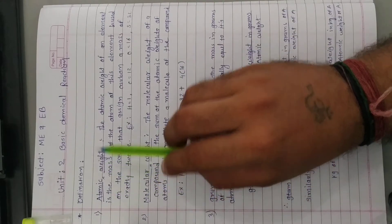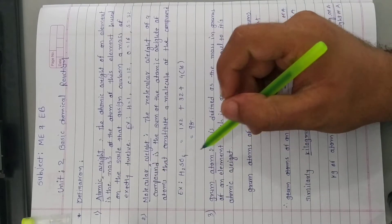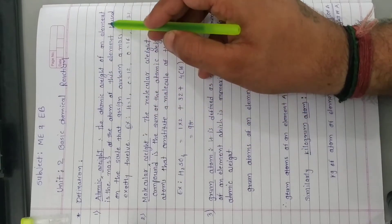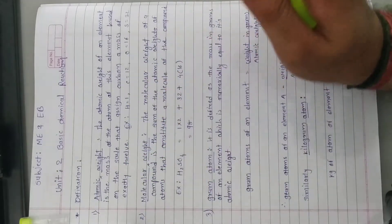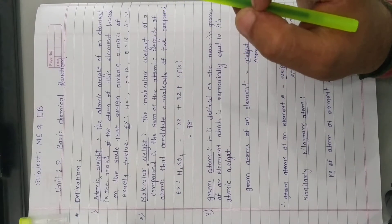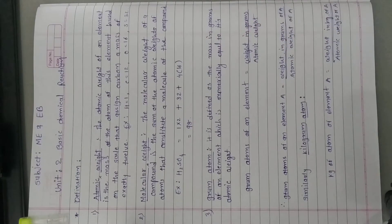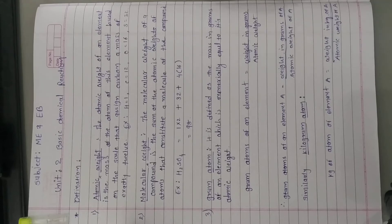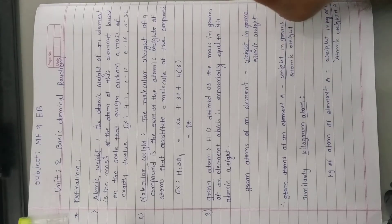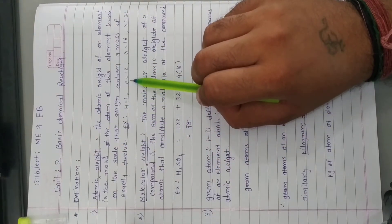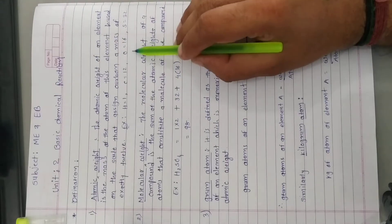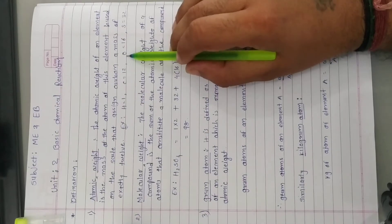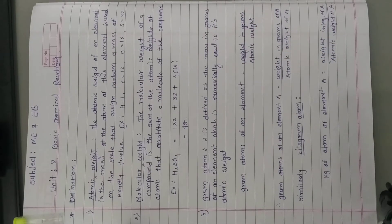Today's topic is atomic weight. The atomic weight of an element is the mass of the atom of that element, based on the scale that assigns carbon a mass of exactly 12. That means every element has a fixed atomic weight by standard. For example, carbon has atomic number 6, so its atomic weight is 12. Sulfur has atomic number 16, so its atomic weight is 32.